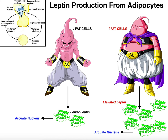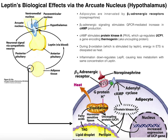The other thing that leptin will also do is, via the hypothalamus, it will trigger the sympathetic neuron to actually act on the adipose cells. The arcuate nucleus is going to trigger sympathetic activity on the adipose cells. There is a beta-3 adrenergic receptor on adipocytes. Sympathetic nerves release norepinephrine, and that activates the beta-3 adrenergic receptor. Whenever you have a lot of leptin present, the arcuate nucleus triggers this sympathetic nerve to release norepinephrine, which activates this receptor, and you get a host of biosignaling events.